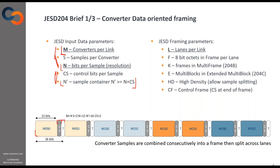Then there's the framing. This data that you want to transmit has to be put onto the lanes in some way. There are several parameters for framing. One of them is L, which indicates how many lanes in the link you have, from one up to as many as you support. F is the number of octets in a frame. I'll have a framing example on the next slide so you can get a good picture of how this works.